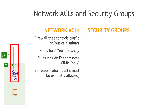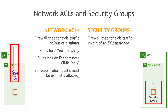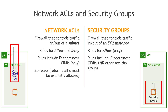And then for security groups, this is a firewall that controls traffic into and out of your EC2 instance, so it's down a level — like you'll see here in the diagram. Here you can only make rules for allow, so allow traffic from other AWS resources, for example. You can include IP addresses, CIDRs, and other security groups.